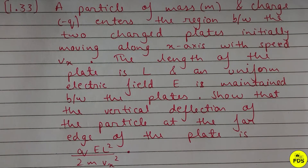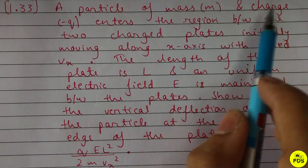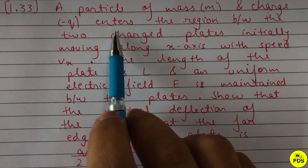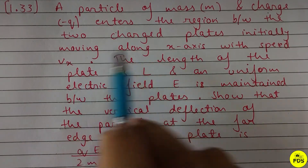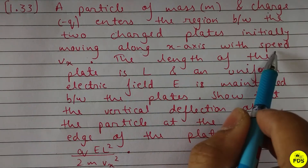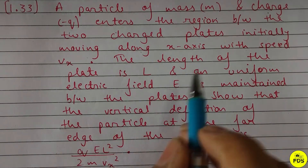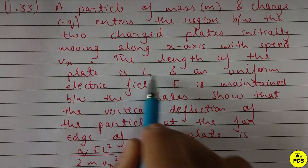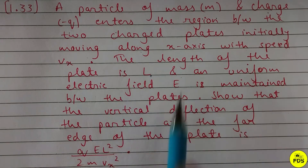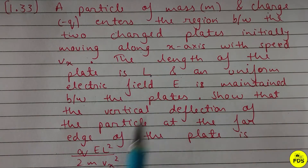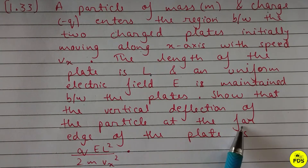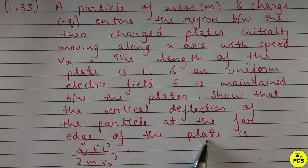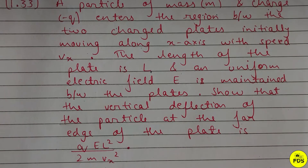In this question, a particle of mass m and charge minus q enters the region between two charged plates, initially moving along the x-axis with speed vx. The length of the plate is L and a uniform electric field E is maintained between the plates. We need to show that the vertical deflection of the particle at the far edge of the plate is qEL² divided by 2mvx².